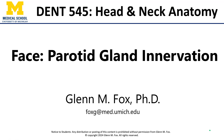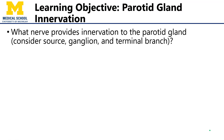Hello everyone, this is Dr. Fox, and let's talk about the innervation of the parotid gland. In this video, we'll discuss the nervous pathway that leads to secretion of saliva from the parotid gland, the preganglionic parasympathetic fibers source, the pathway that those fibers take to the otic ganglion, the postganglionic pathway, all the way out to the parotid.